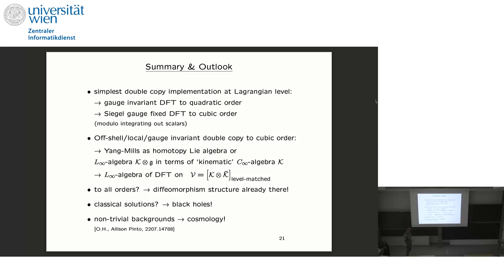Another natural question is what about classical solutions. There's a growing literature on using double copy at the level of classical solutions, like black holes. Since this is an off-shell construction, this should work as well. Finally, what about non-trivial backgrounds? This is very background-independent so far — everything works around flat space, giving double field theory expanded around flat space. Eventually one would like to see other backgrounds. I want to advertise my recent paper with Alison Pinto, where we consider double field theory in cosmology — considering time-dependent backgrounds. Introducing just one more coordinate on which the background depends, namely time, introduces a huge amount of complications. Everything becomes much more subtle, and it's known that cosmological perturbation theory is hard, but it's extra hard in this framework. Thank you very much.